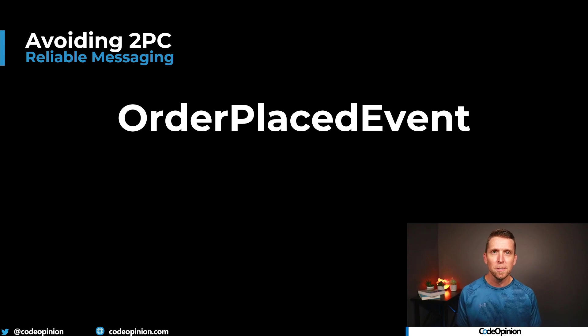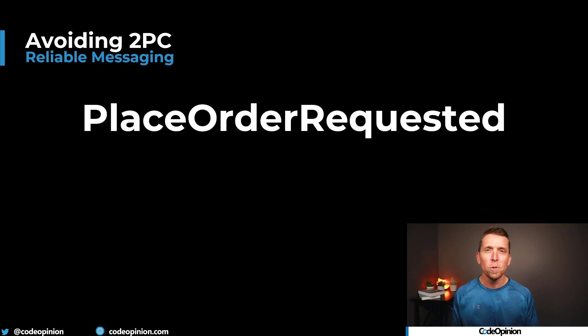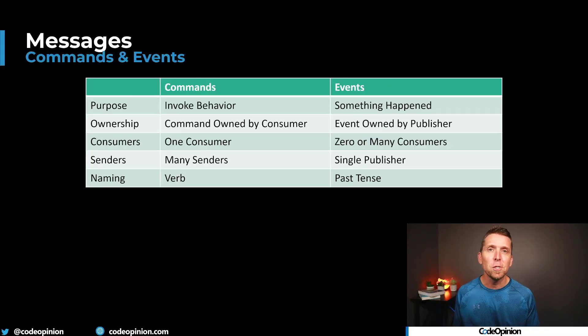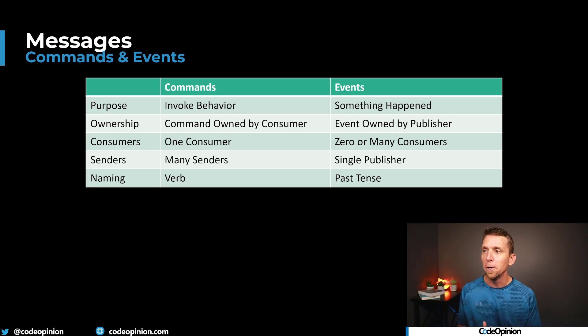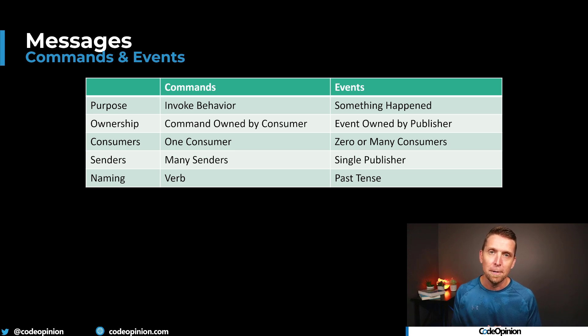You might think it's about semantics — instead of saying 'order placed' (because we didn't really place the order), we say 'place order was requested' and that's the event we publish. But the issue here is you can get into forcing the idea of events when really in a situation like this you probably want a command. There are differences between events and commands. Commands are about invoking behavior — doing something, I want to do something. Events say I have already done something, something has happened. In terms of ownership, commands are owned by their consumer; events are owned by their publisher. With a command you're going to have a single consumer — not zero, not two, absolutely one.